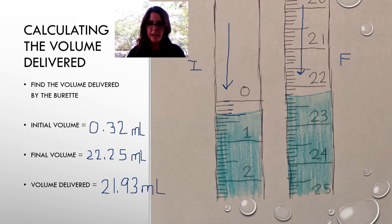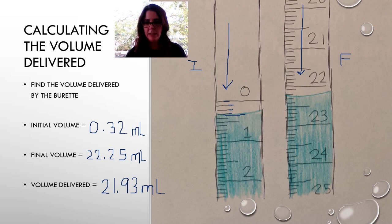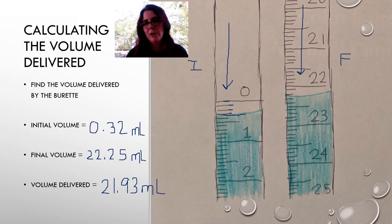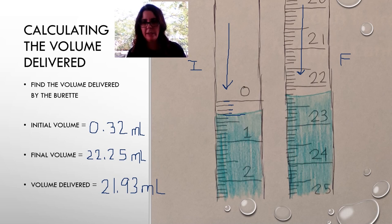Our burettes hold 50 milliliters. Since we're doing two trials of about 20 milliliters each, and both together are less than 50 milliliters, we don't have to refill between trials. We put in the first 20 milliliters, record initial and final volumes, then add the next 20 milliliters, record those volumes, and subtract to find how much was delivered each time.